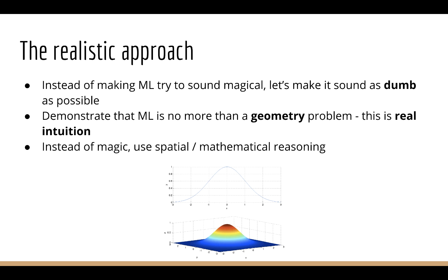But in fact, the reality is the opposite. I prefer the realistic approach. Instead of making machine learning sound magical, I want to make machine learning sound as dumb as possible. In fact, I'm going to demonstrate to you that it's nothing more than a geometry problem. This is real intuition. This is better thinking because instead of thinking you're doing magic, you can use basic spatial reasoning skills to understand machine learning. And this puts you in a much better place to actually implement machine learning algorithms.